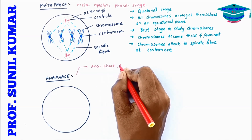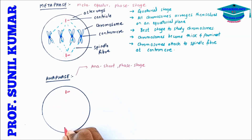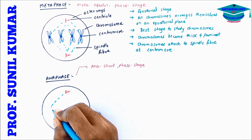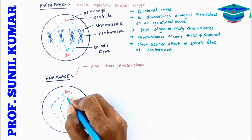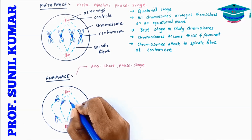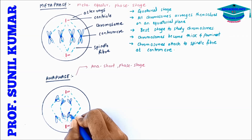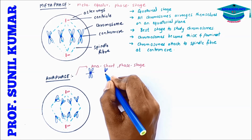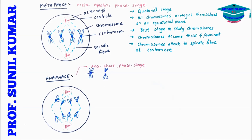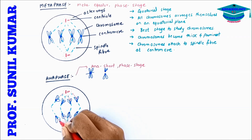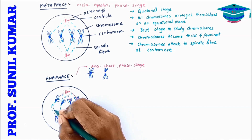Anaphase: 'ana' means short and 'phase' means stage, so it is the shortest stage of all four stages. In anaphase, each chromosome breaks from the centromere and divides into two daughter chromosomes, which then start moving towards opposite poles.